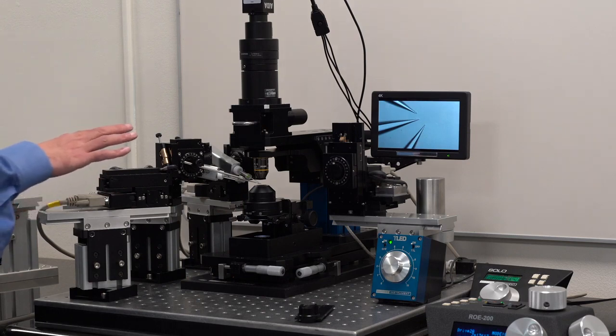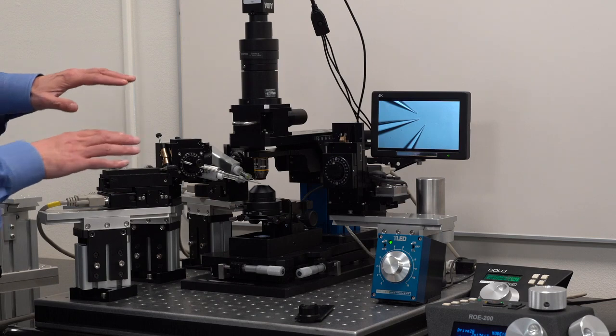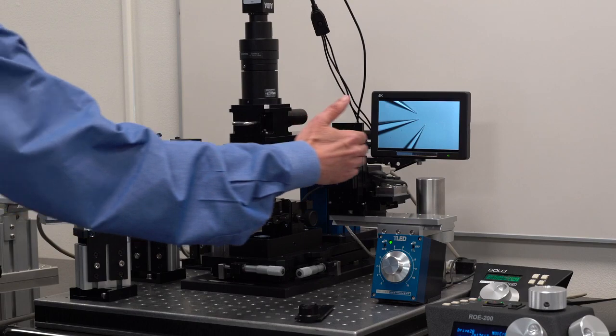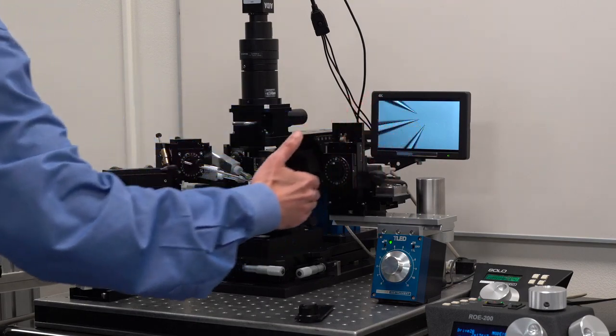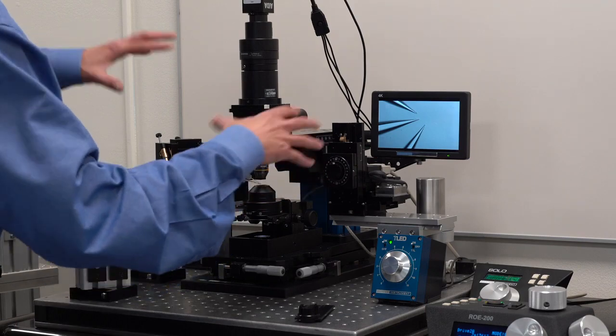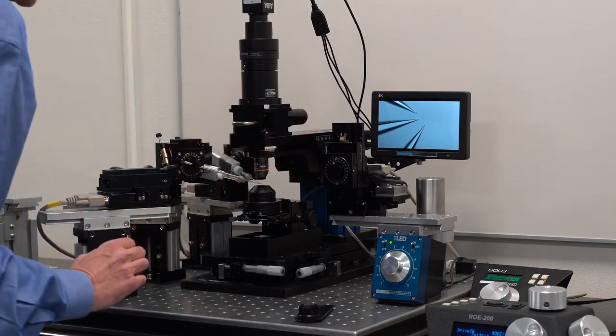The reason to have a narrow format manipulator is exactly for setups like this. As you can see, I can put three on this side. And if I wanted to, I could put three on the other side and have six probes going into the sample.